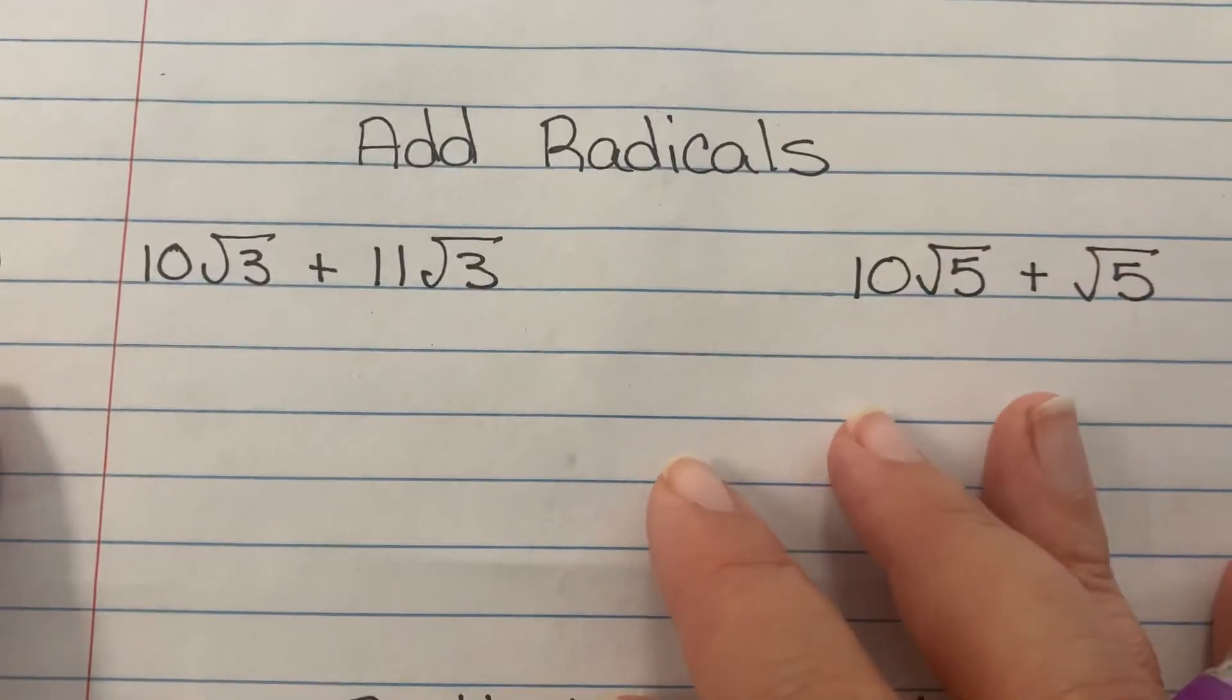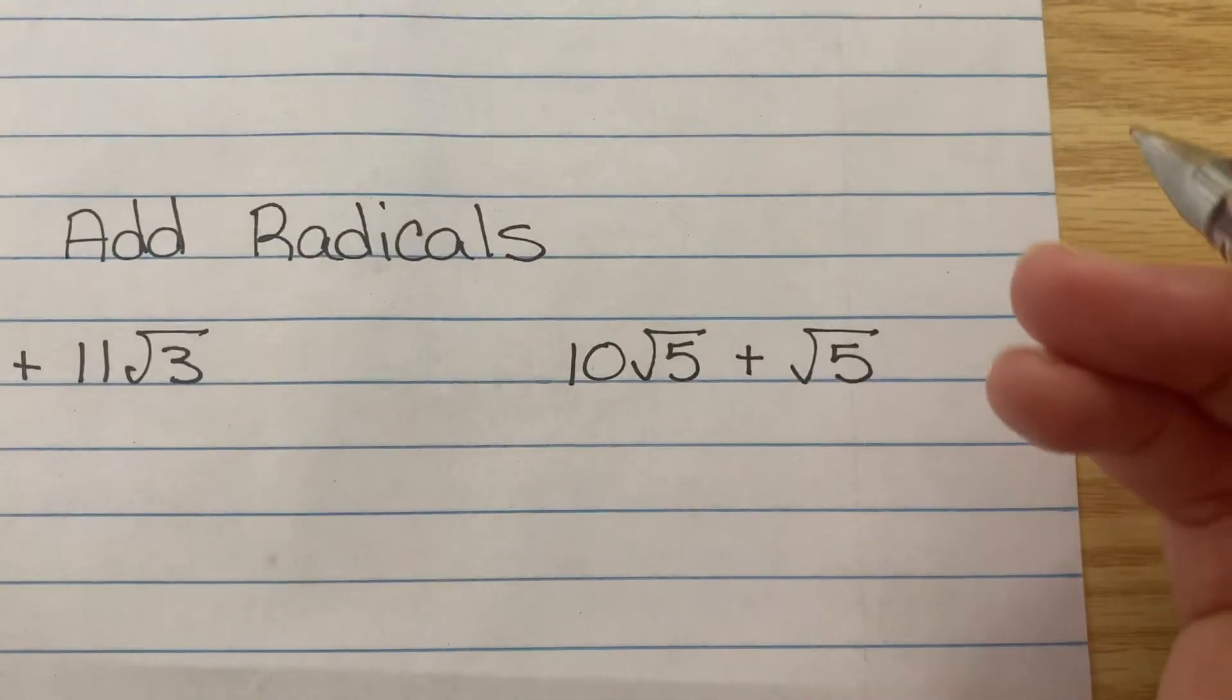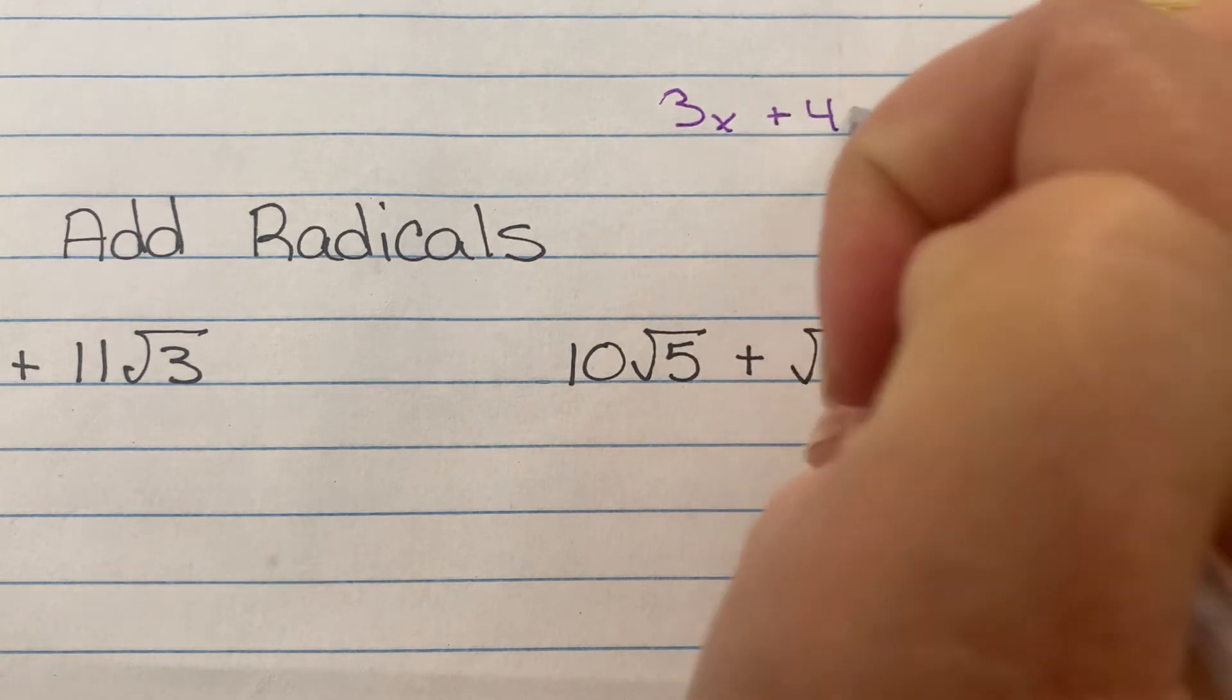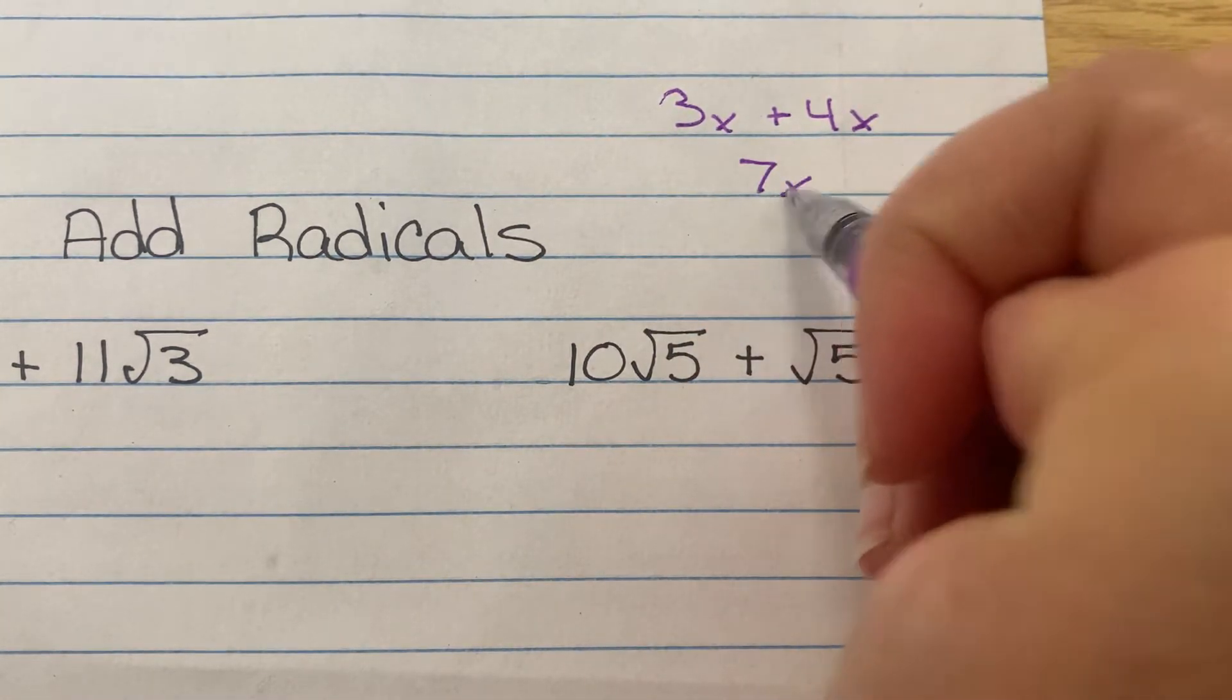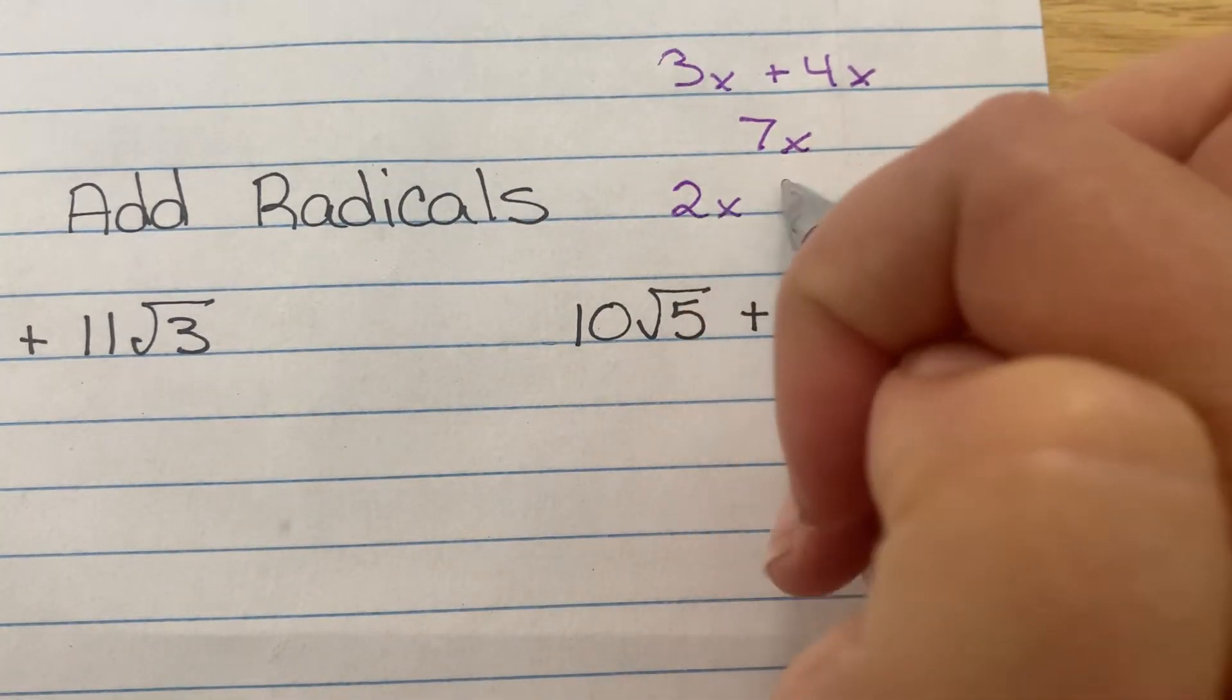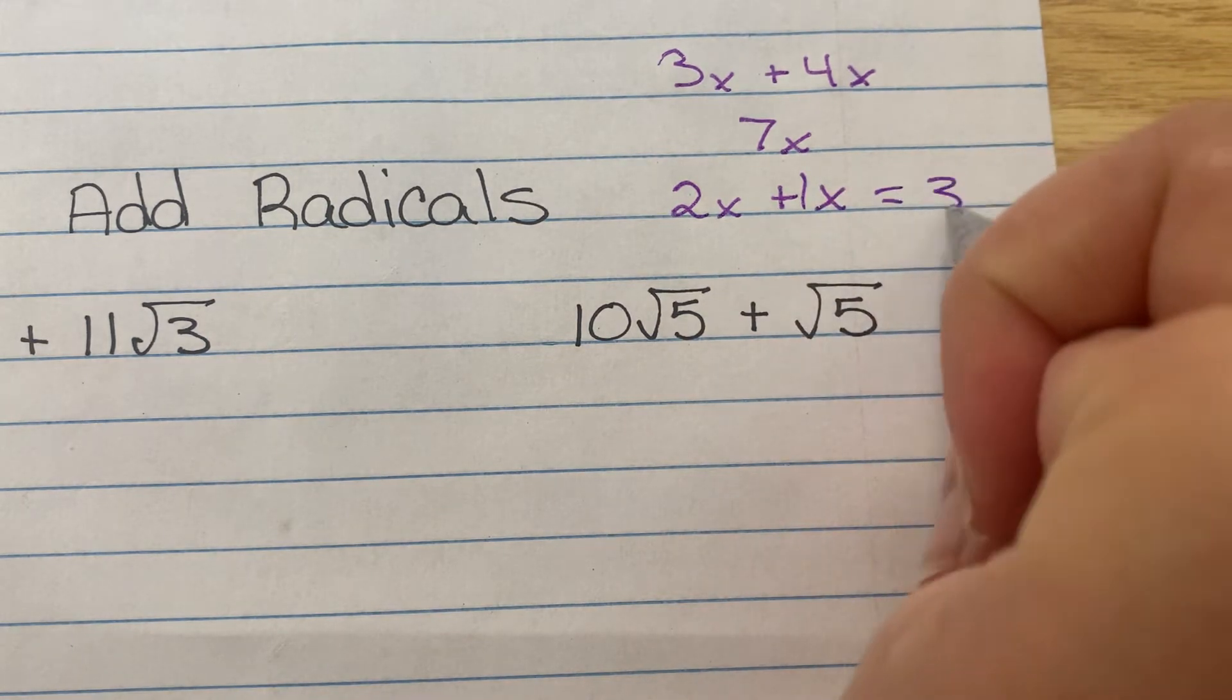Now with adding radicals, think of it just as if you're adding numbers with variables. So if you had 3x plus 4x, this would be 7x. The same as if you had 2x plus x, there's that hidden 1 there, so that would be 3x.